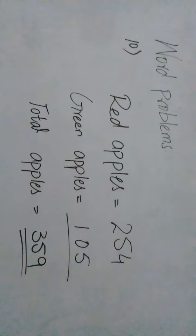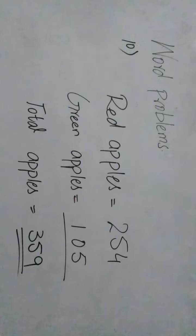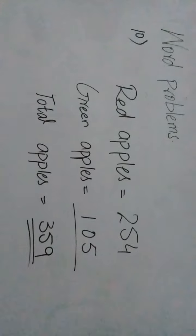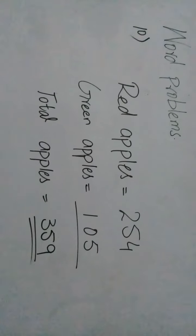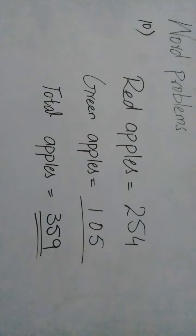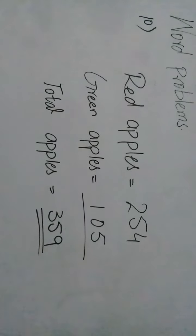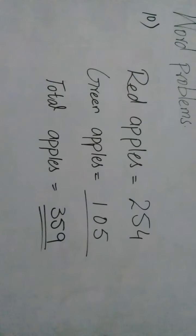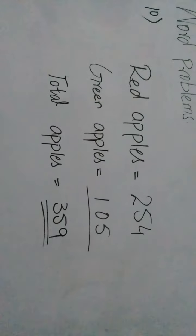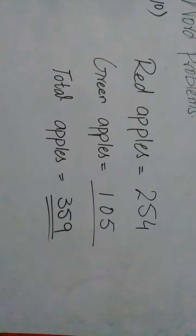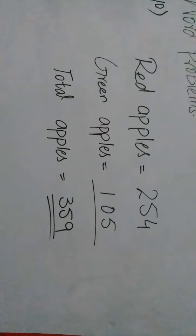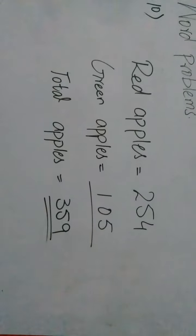Red apples in the crate equals 254. Green apples in the crate equals 105. You have to make the sum of both numbers: 254 + 105 = 359. That means there are 359 total apples in the crate.